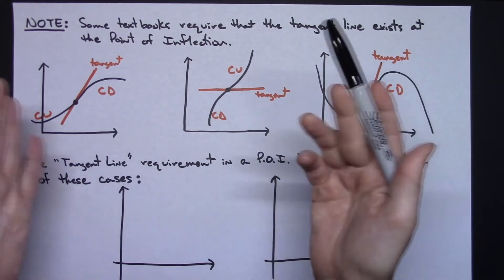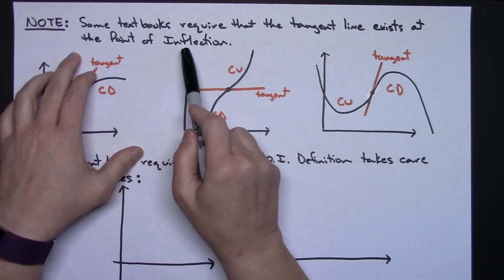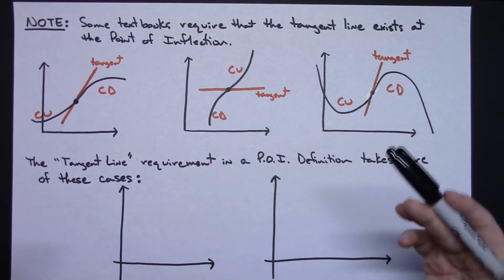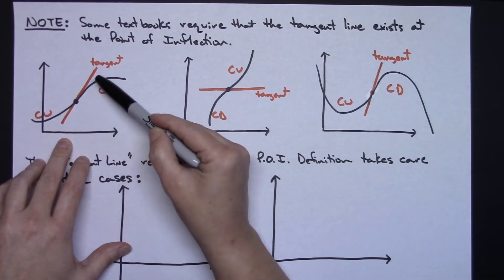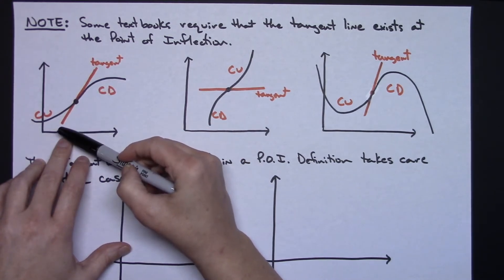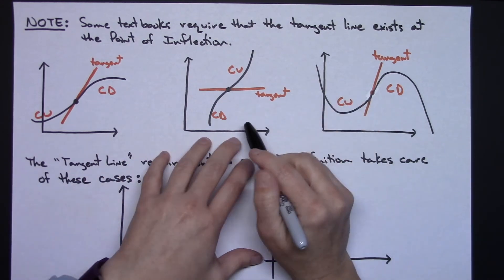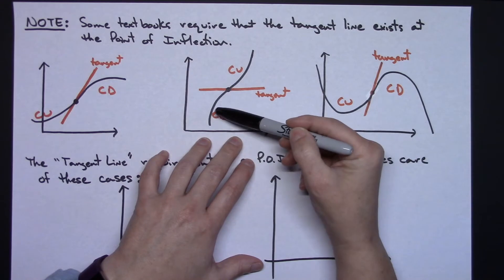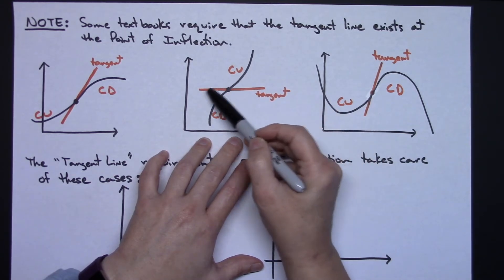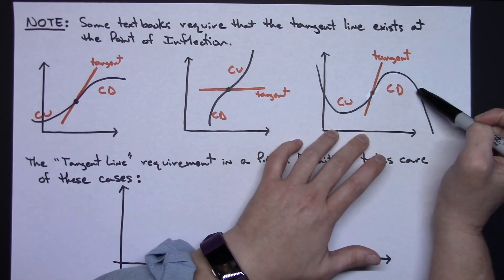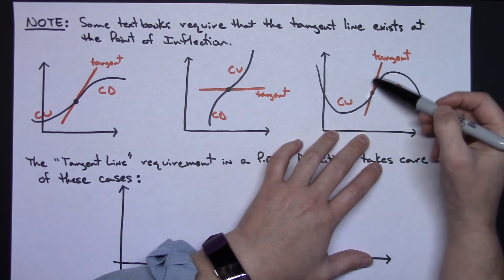I want to make a special note here. I teach out of a Larson textbook, and in that textbook along with some others, some textbooks require that the tangent line exists at the point of inflection. I've drawn some pictures to help with that. If I've got concave up here and concave down here, I can clearly draw a tangent line there — the tangent line exists. Same for other smooth polynomial curves — concave down here, concave up here, and I can draw a tangent line as it goes around.